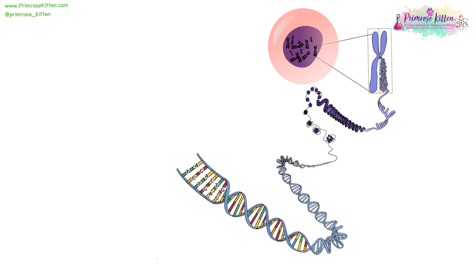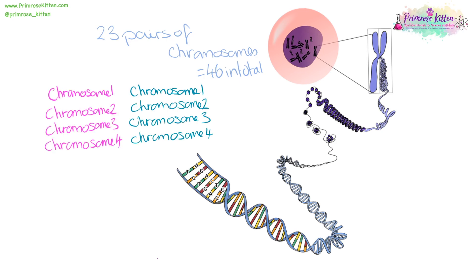Your chromosomes are in the nucleus, and you have 23 pairs — that is 46 in total. You get one copy from your mother and one copy from your father, so you'll have two copies of chromosome one, two copies of chromosome two, and so on. This allows for you to be homozygous or heterozygous for dominant or recessive genes.